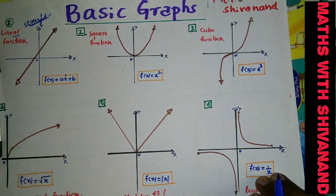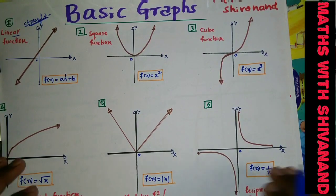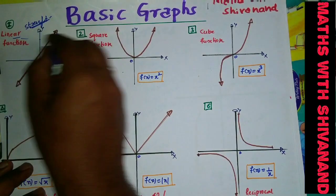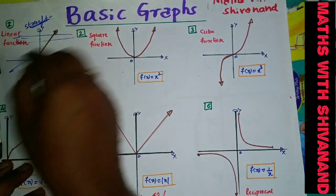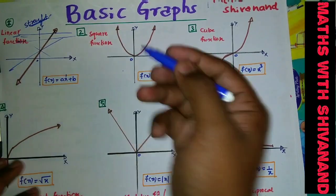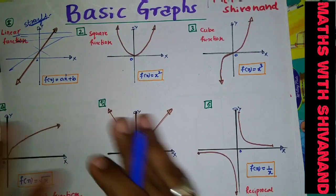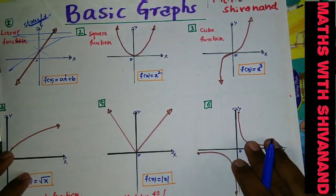So a linear function is nothing but a straight line. The curve y = mx + c — it may be a horizontal line, vertical line, or any kind of straight line. Linear means it moves in a straight line. That is enough.